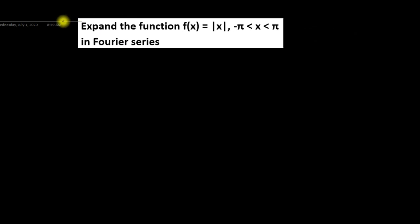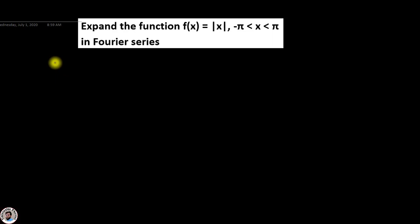Assalamu alaikum friends. Today we will solve an example related to Fourier series which says: expand the function f(x) = |x| in the interval from -π to +π in the Fourier series. It means we have to expand this function in Fourier series.